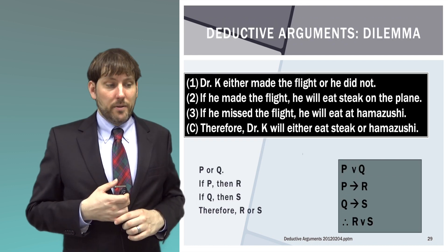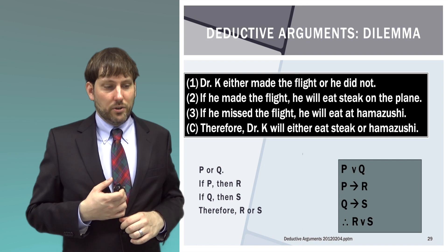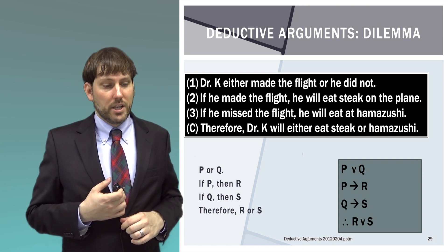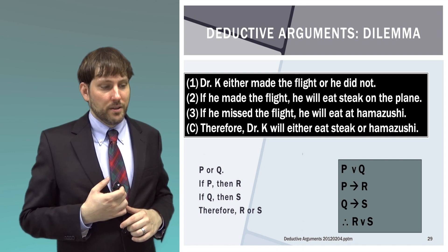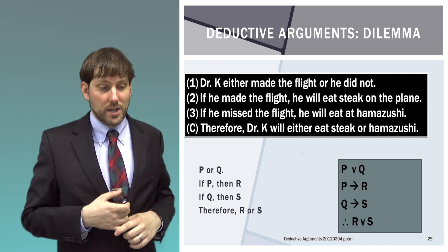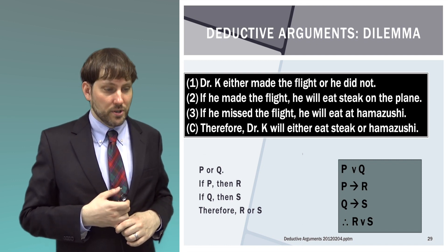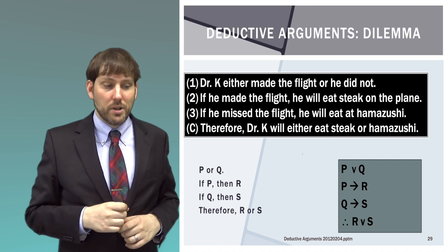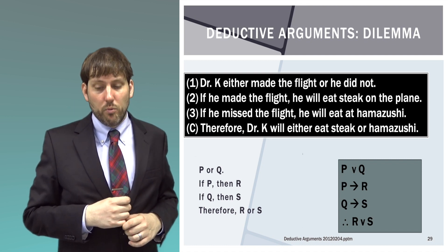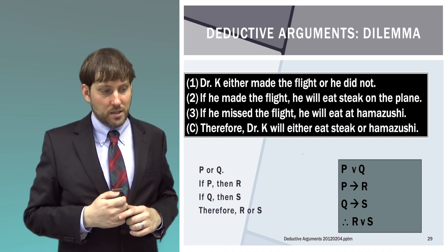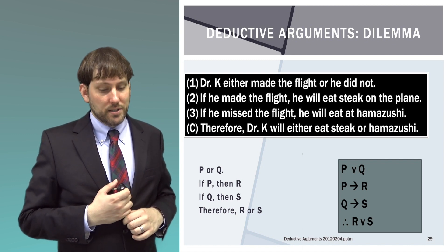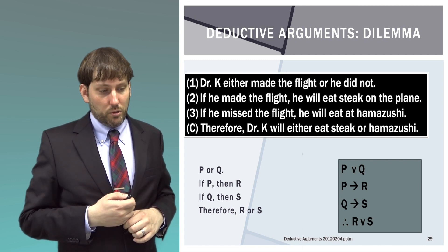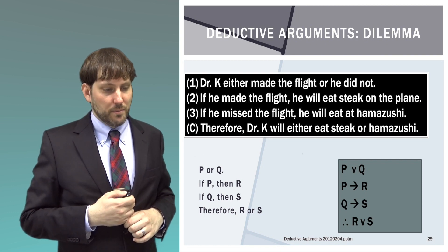A dilemma works as follows: 'Dr. K either made the flight or he did not. If he made the flight, he will eat steak on the plane. If he missed the flight, he will eat at Hamazushi. Therefore, Dr. K will either eat steak or Hamazushi.' We have an OR, two IF-THENs, and we look at either of the consequences. The pattern is: P or Q; if-P then-R; if-Q then-S; therefore R or S.